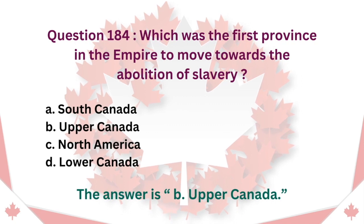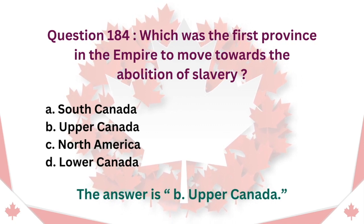Question 184: Which was the first province in the empire to move towards the abolition of slavery? A. South Canada. B. Upper Canada. C. North America. D. Lower Canada. The answer is B. Upper Canada.